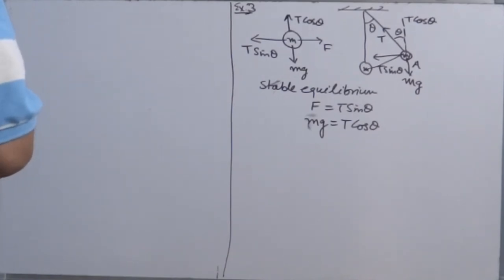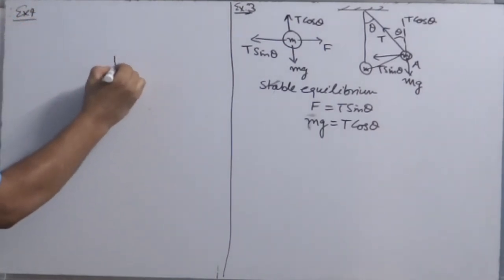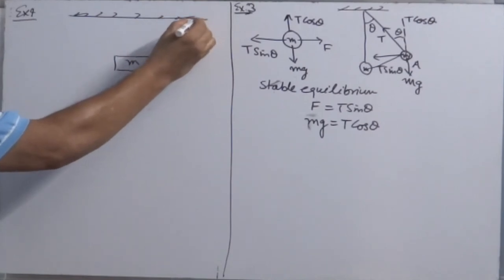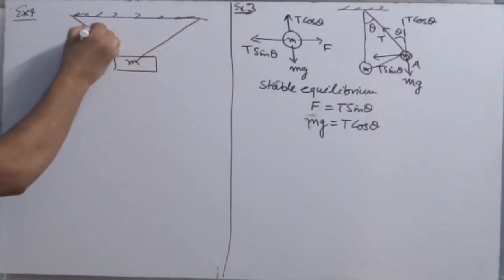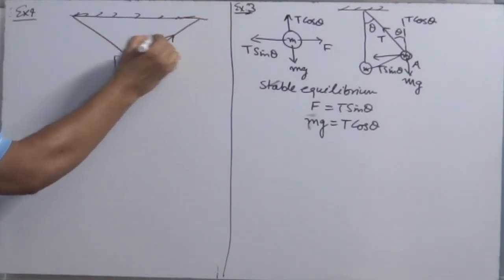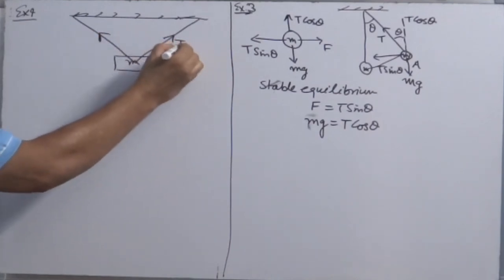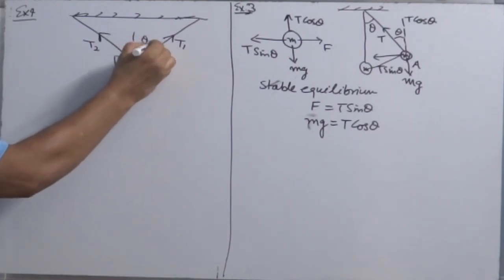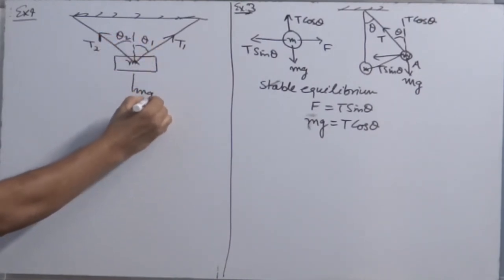Let's take one more example of system. Suppose this is a mass block which is attached with two strings, one string is this side, another string goes this side. Here is the tension T1, here is the tension T2, angle theta 1, angle theta 2, weight is acting down.